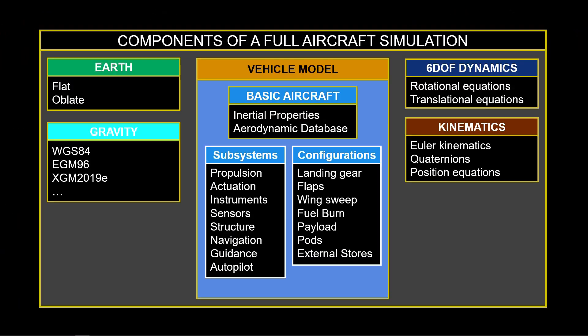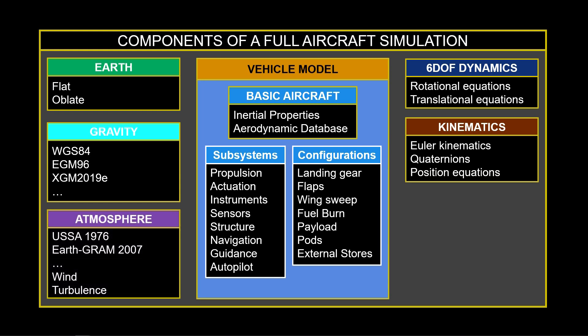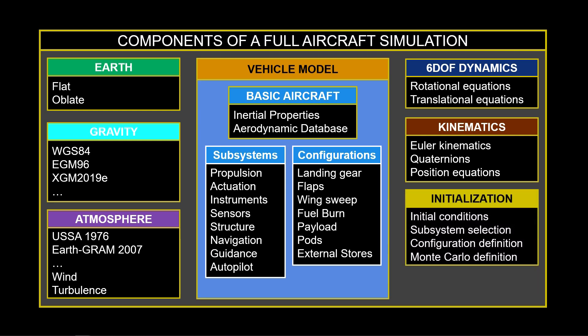There's also an atmospheric model. This captures properties like temperature, speed of sound, and density of the air as a function of altitude. There can be atmospheric disturbances like wind or turbulence. To start the simulation, we'll also need initial conditions, like initial velocity and angular rates of the aircraft.